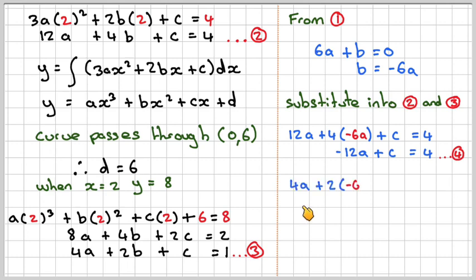Into equation 3, we get 4a plus 2 times minus 6a plus c equals 1. 2 times minus 6 is minus 12, and minus 12 plus 4 gives minus 8. So minus 8a plus c equals 1. We'll call that equation 5.